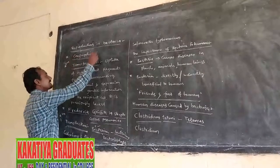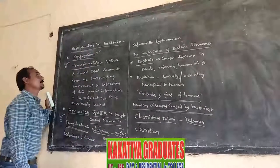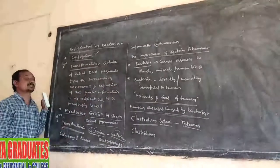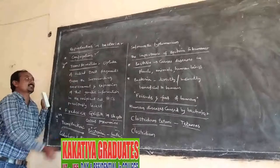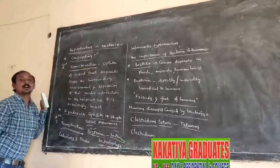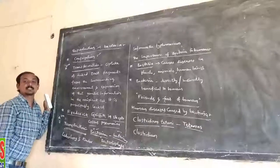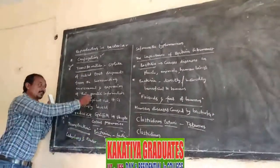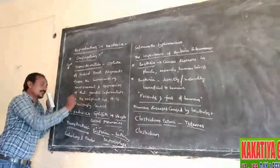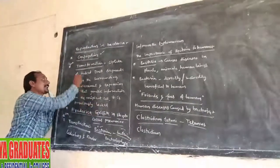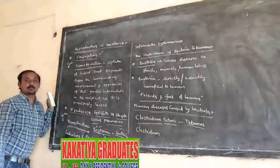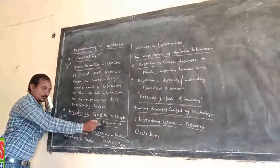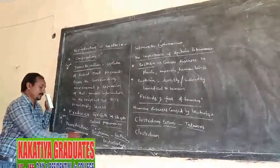Bacteria. In the previous class, I was discussing about the topic on relation. Now, we are discussing about the topic of transformation. It is a two marks question. Transformation means uptake of naked DNA fragments from the surrounding environment and expression of that genetic information in the recipient cell, and it is previously lacking. It was discovered by Frederick Griffith in Streptococcus pneumoniae.